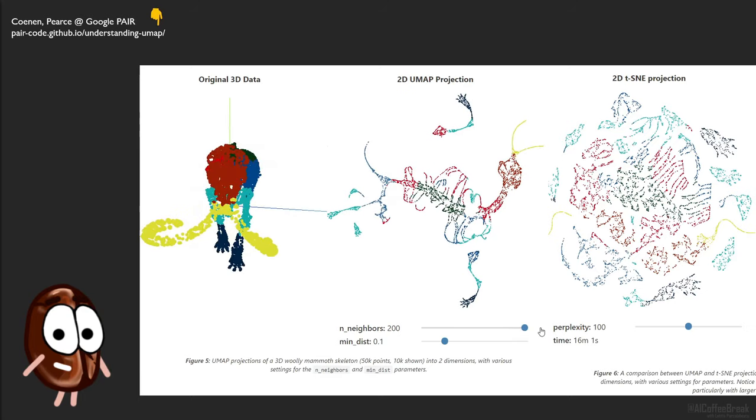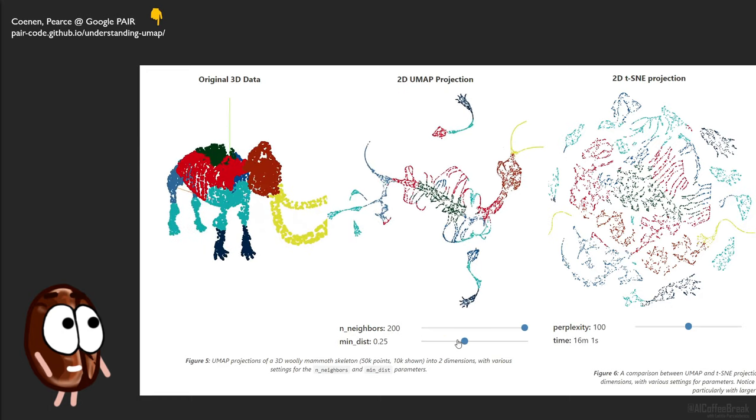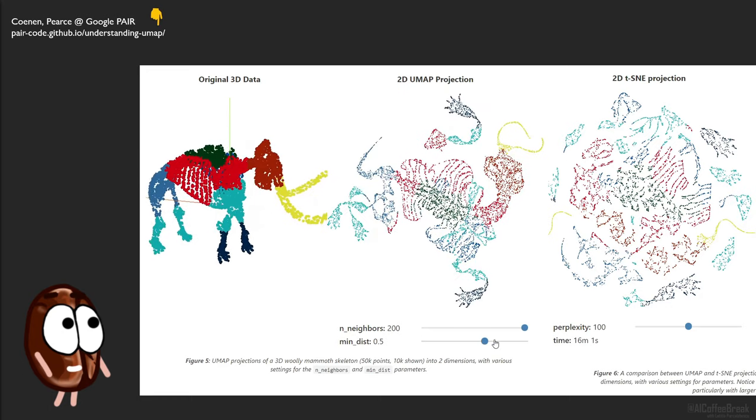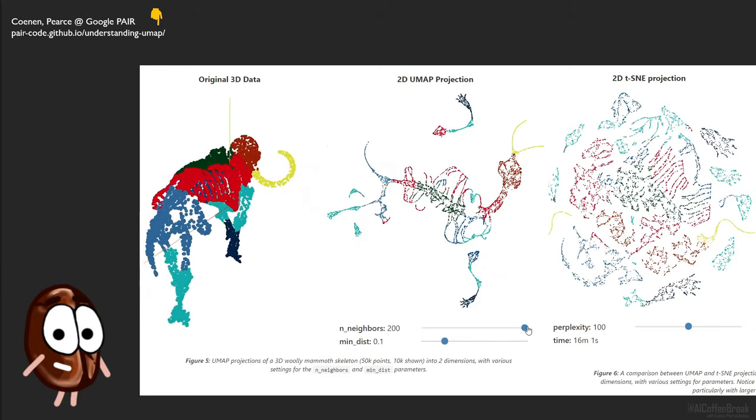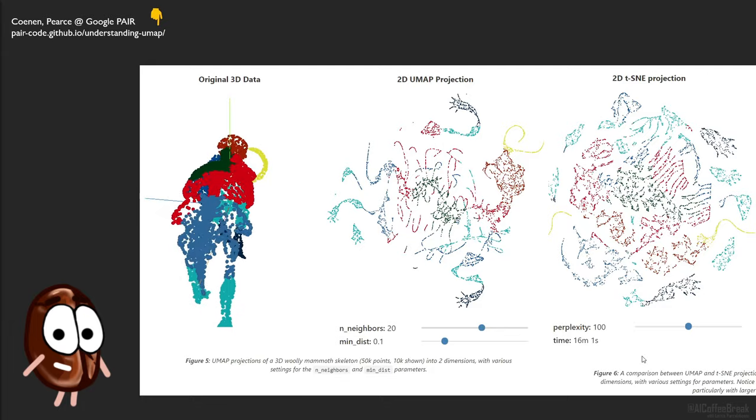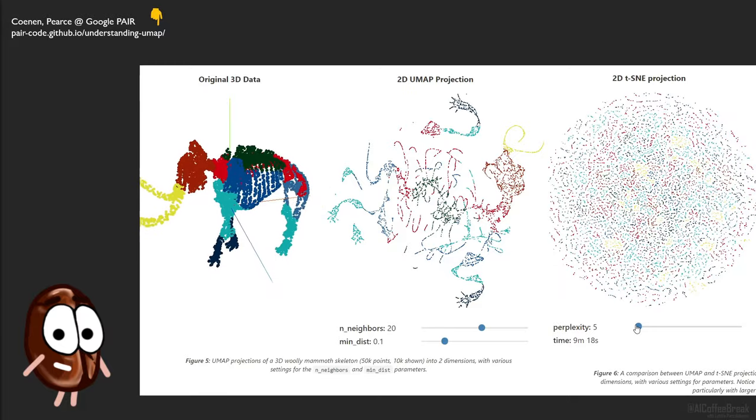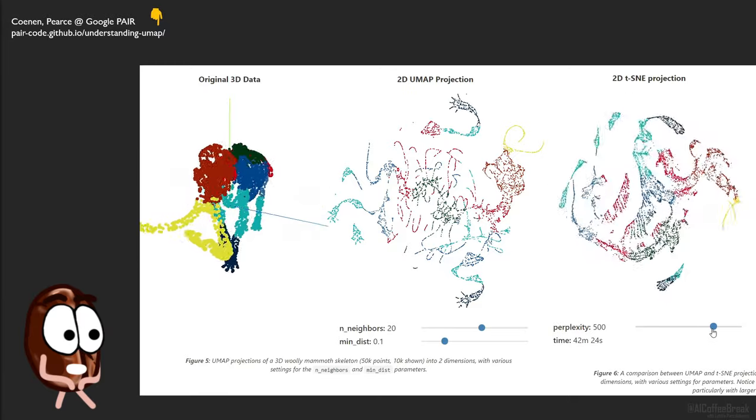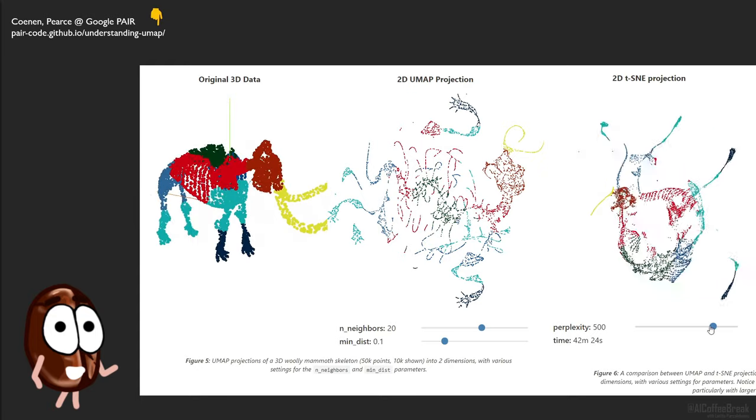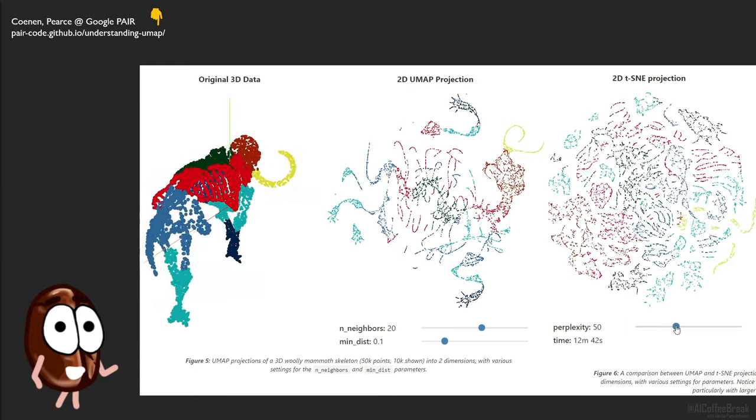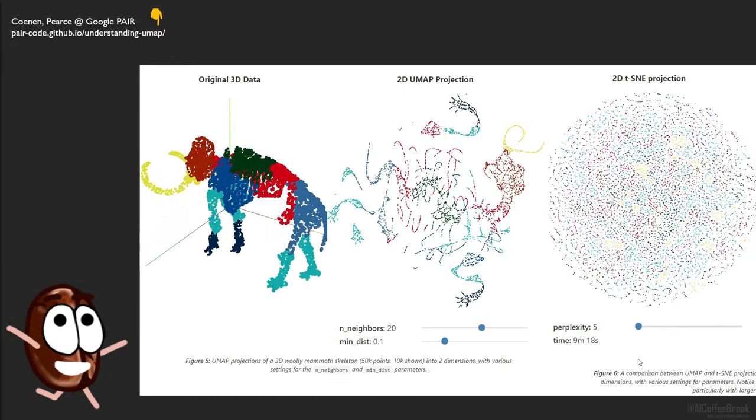The minimum distance parameter allows to specify how tightly the algorithm will map points into the target low-dimensional space. A high minimum distance will spread the points more. But it is important to notice that a stepwise change of these two parameters continuously changes the UMAP result. t-SNE on the other side is not that great in this aspect, because when changing the parameter of t-SNE, t-SNE's result completely changes. We really recommend you to play around yourself with all examples in this blog post.